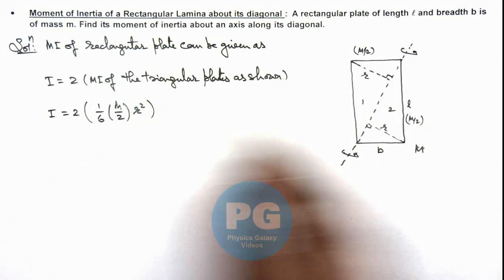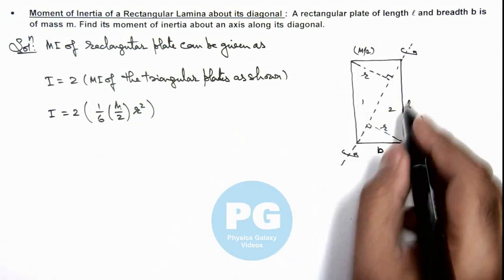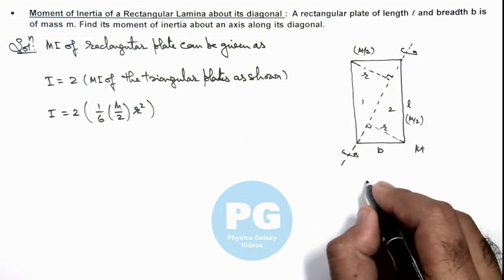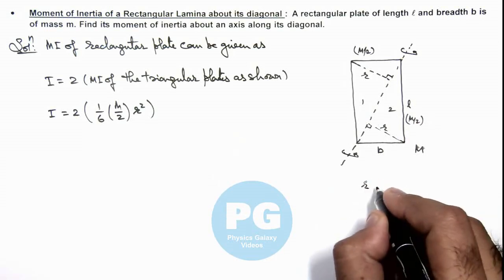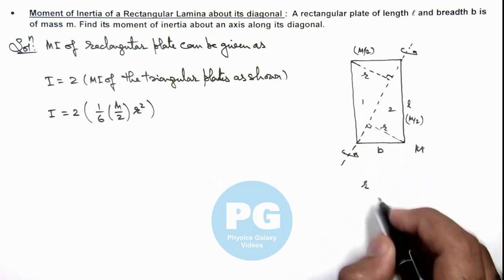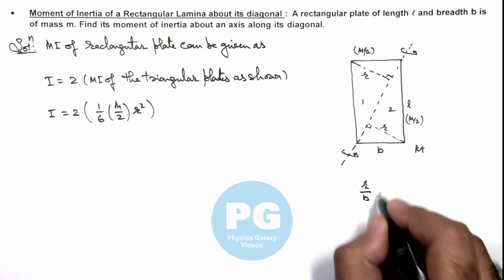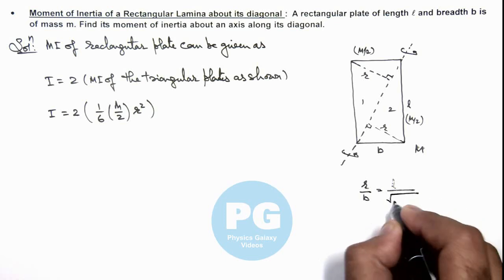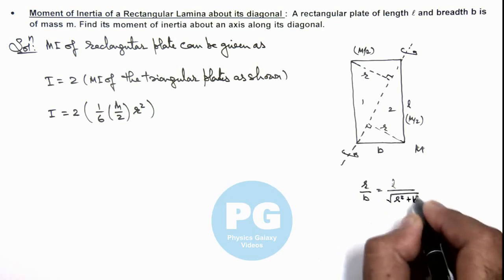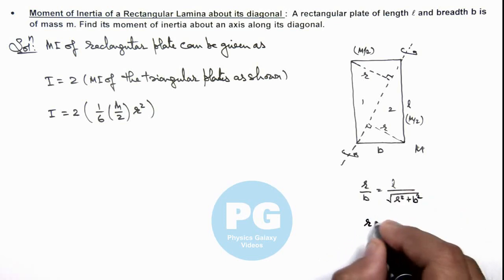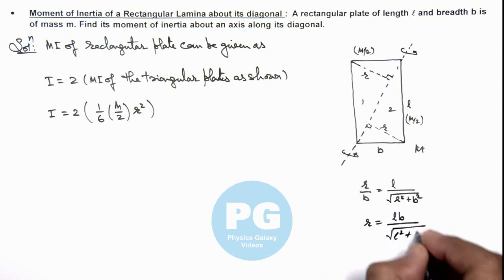And if we substitute the value of r over here as these lengths are l and b, the value of r we can write by similar triangles as r by b is equal to l by root of l square plus b square. So here the value of r we are getting as l b upon root of l square plus b square.